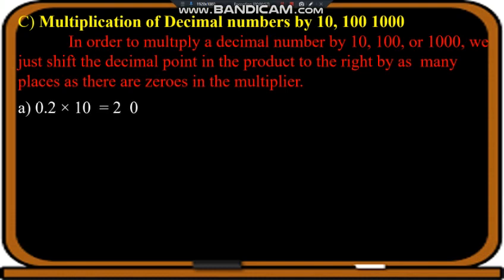For example, 0.2 into ten. Since we have ten, one zero is there. So the decimal will shift one place to the right — that is, after two. After two we have zero, which doesn't have any value. So the answer will be two.